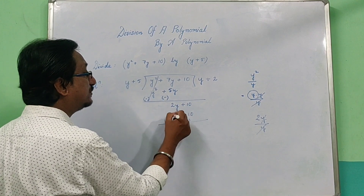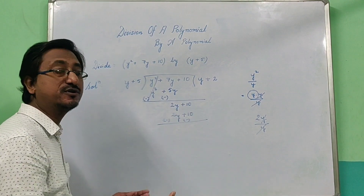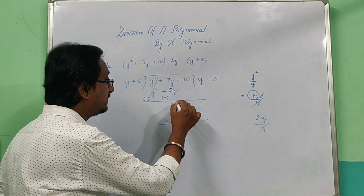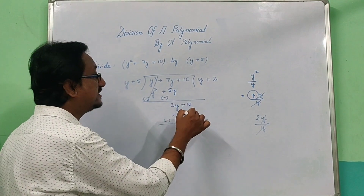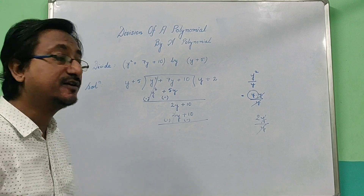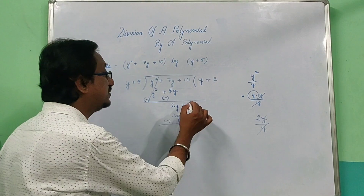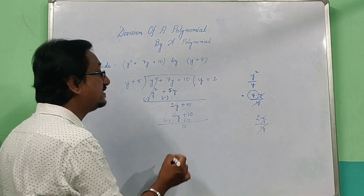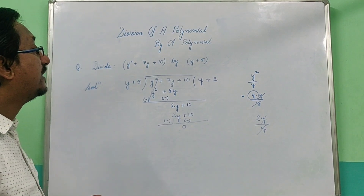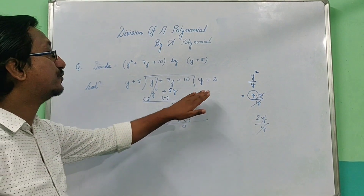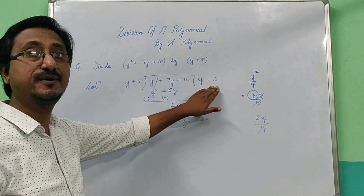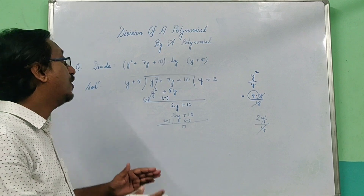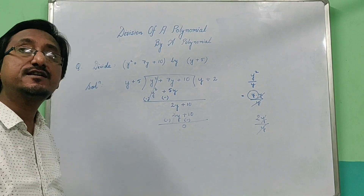The two terms are the same number, so 0 will cancel. And 10 minus 10 will be 0 — cancel. So the remainder is 0. The answer is y plus 2, remainder is 0. This is our answer, and we can do division.